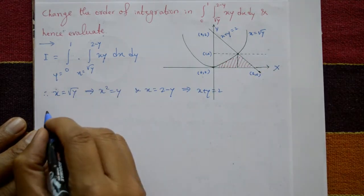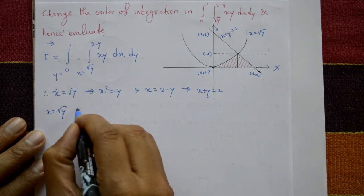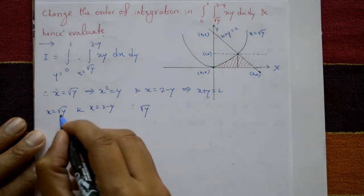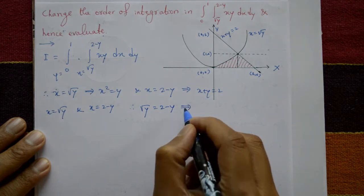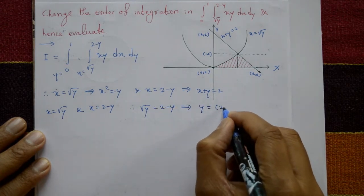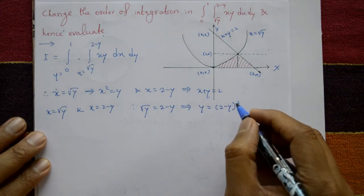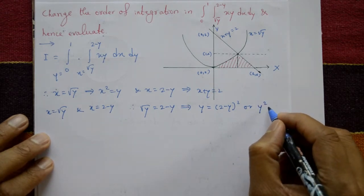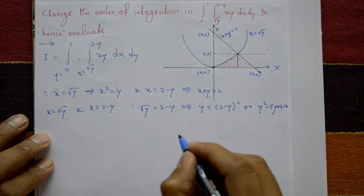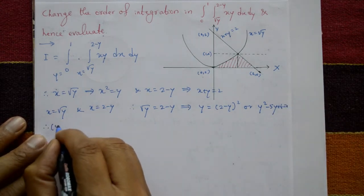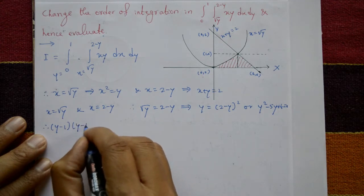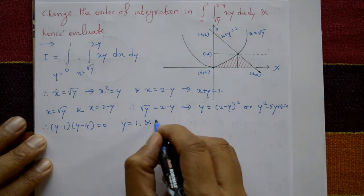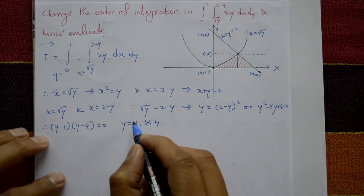When y = 1, x = √1 = 1. Setting √y = 2 − y and squaring both sides: y = (2 − y)², which simplifies to y² − 5y + 4 = 0. Factorizing: (y − 1)(y − 4) = 0, giving y = 1 and y = 4.